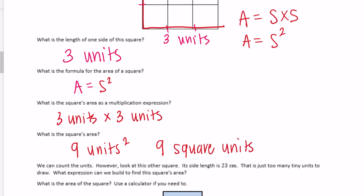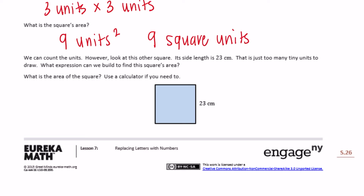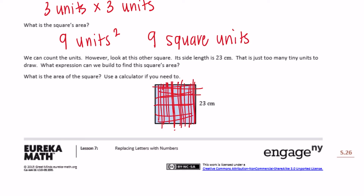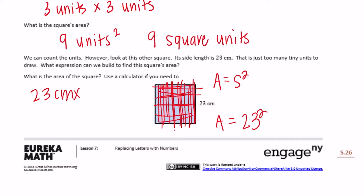Now look at this other square — its side length is 23 centimeters. That's just too many tiny units to draw. Instead of drawing 23 tiny lines both ways and counting them all, we use the formula. Since area is the side squared, we can write 23 to the second power, or 23 centimeters times 23 centimeters.